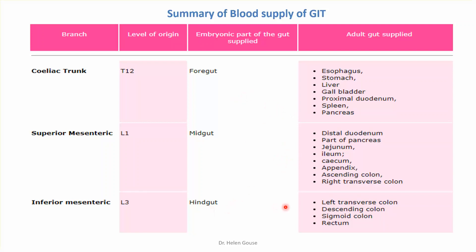The organs of the hindgut are the left one-third of the transverse colon, the descending colon, sigmoid colon, and rectum. If you know the organs of each gut, you can easily identify the blood supply from the branches of each respective artery.